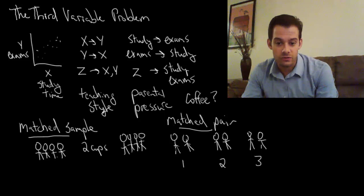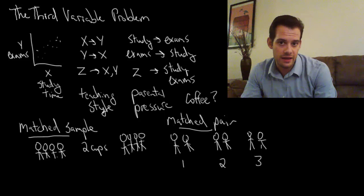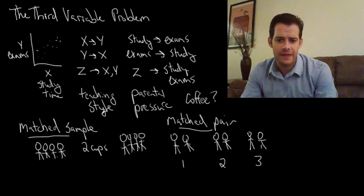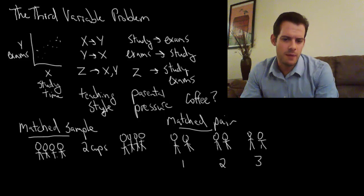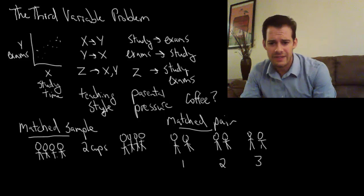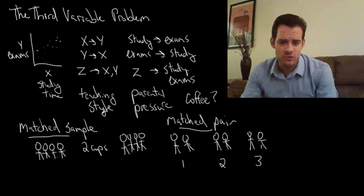I say, okay, this student drinks one cup per day and he has high study time. And this student drinks one cup of coffee per day and has low study time. And this student drinks two cups per day and has high exam scores. And this student drinks two cups per day and has low exam scores.